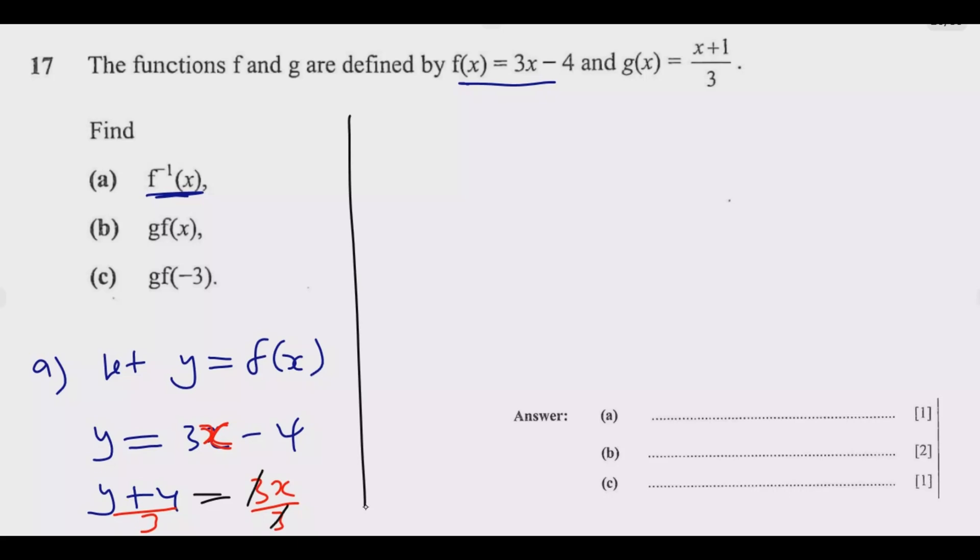What I get now is x equals (y plus 4) divided by 3. Then at this point, whenever there is x, we substitute it. Let x now equal f to the power negative 1 of x, which we are calling the inverse.